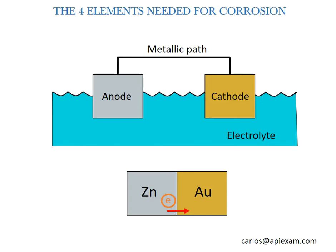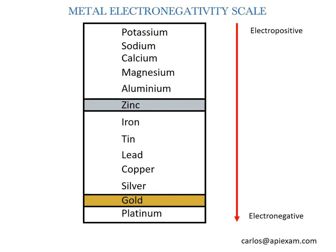What you are seeing here is a galvanic scale of metals, with zinc as the most anodic metal at the top and gold at the bottom. The electronegativity of gold is the reason why it is a precious metal, while zinc is used as a sacrificial metal.